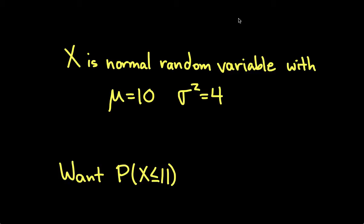Hello and welcome to this video. The purpose of this video is to show how to compute probabilities associated with a normal random variable. To begin, let's assume x is a normal random variable with a mean of 10 and a variance of 4, which means that its standard deviation will be the square root of 4, which is 2.